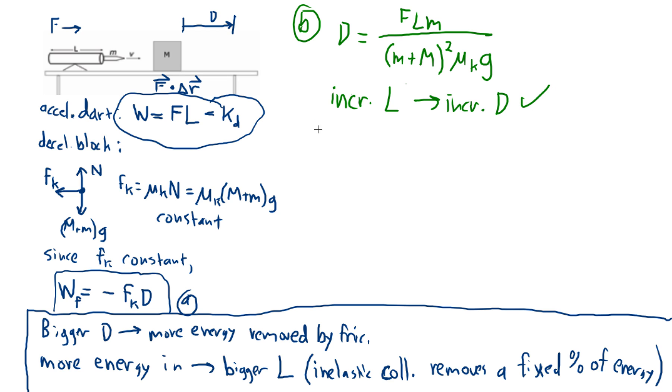So, you can say that. You can also say, let's see, work done by the constant force F. Work done, maybe I'll say work Excel for work done in accelerating the dart equals F L. And the work done to decelerate the dart is negative FK D, and these two imply, since there's a fixed percentage of energy lost in the inelastic collision, what these imply is that L and D should relate linearly. And lo and behold, they do, right?